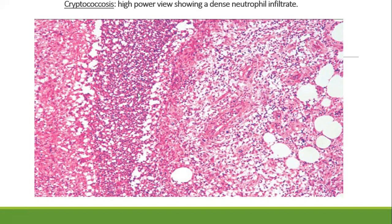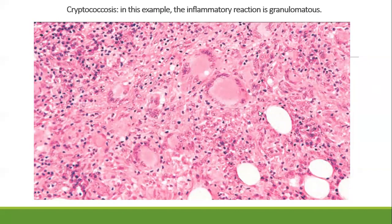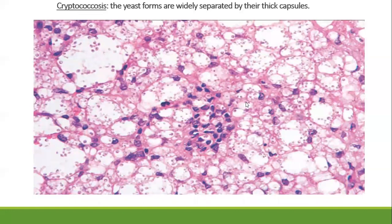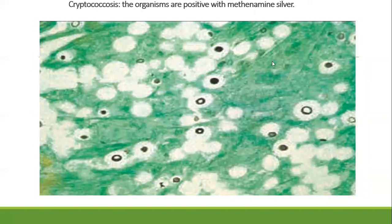The histopathology shows dense neutrophilic abscesses with intense mucoid dermal reaction surrounded by granulomatous infiltration. In addition to neutrophilic abscesses, there is a mucinous infiltrate with granulomatous reaction, multiple giant cells, and yeast in the form of multiple small spherical bodies with thick capsules seen within histiocytes and giant cells. These are demonstrated by mucicarmine stain, in which Histoplasma and Blastomyces are negative — making mucicarmine an important stain to differentiate among related invasive fungal infections. Methenamine silver stain highlights these particles.